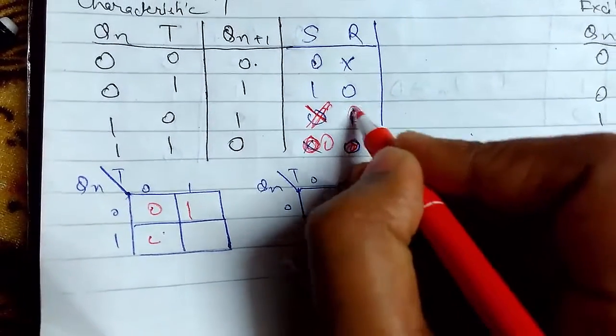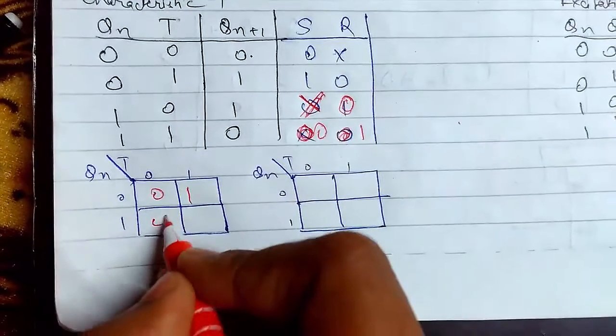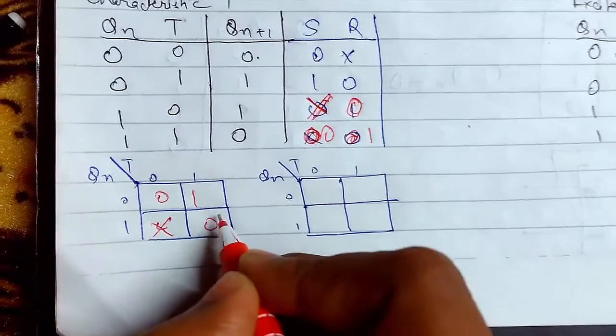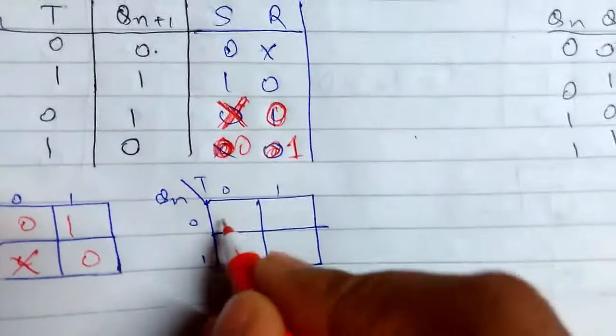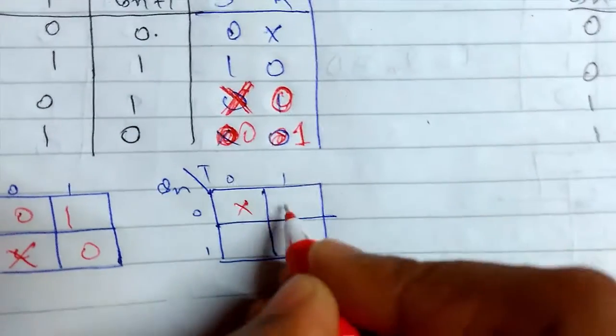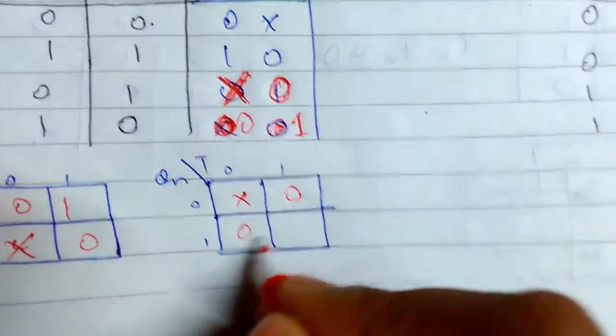This will be 1. This will be cross 0, and this will be, now for this it will be cross 0, 01.